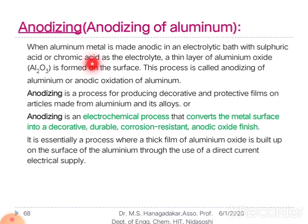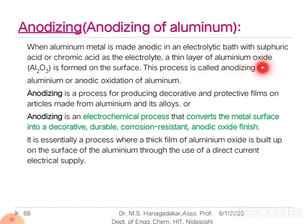When aluminium metal is anodic in an electrolyte bath with sulfuric acid, chromic acid, or any acid electrolyte, a thin layer of aluminium oxide (Al2O3) is formed on the surface of the substrate. This process is called anodizing of aluminium, or anodic oxidation of aluminium.